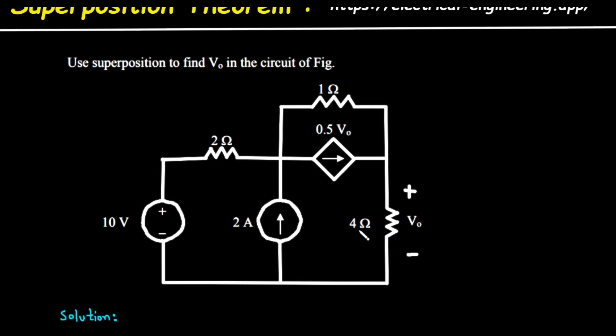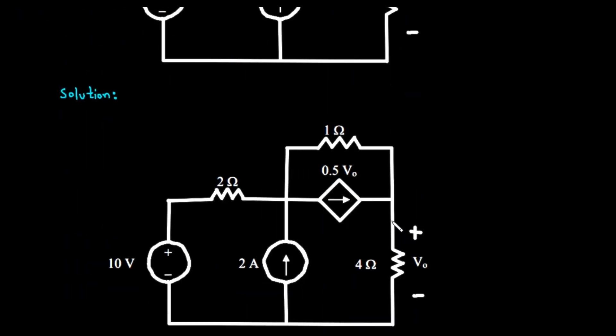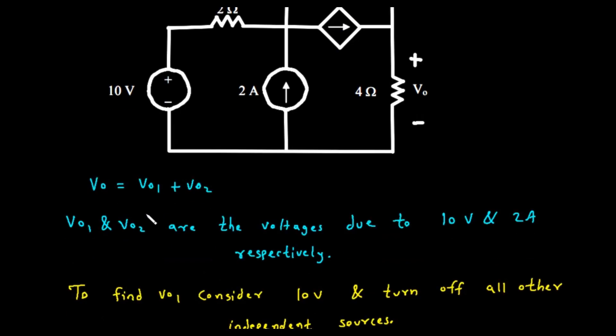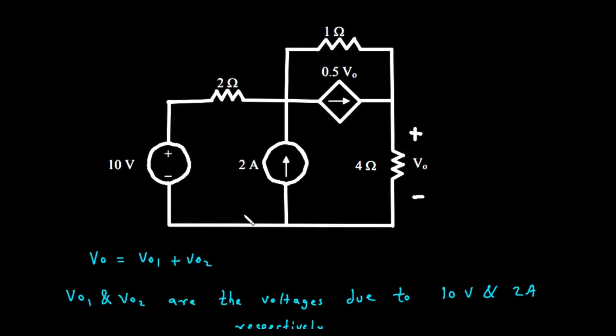So we can write the equation: V0 equals V01 plus V02. Here, V01 is the voltage due to the 10-volt source, and V02 is the voltage due to the 2-amp source.